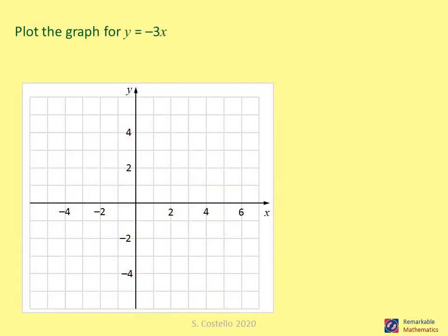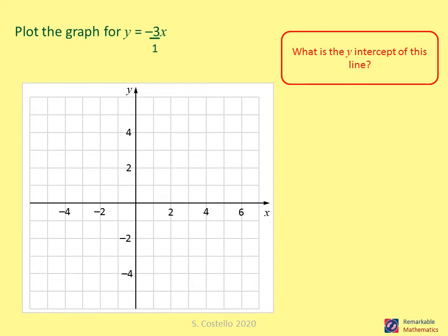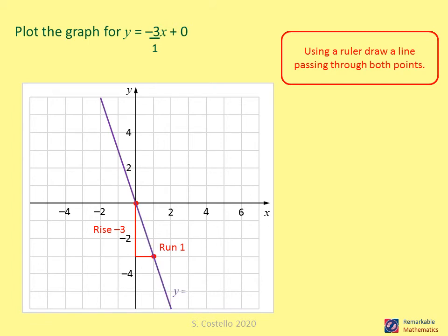Plot the graph of y equals minus 3x. Write the gradient over one to make the rise and run obvious. The y-intercept: since c has no stated value, it equals zero, so the line crosses at the origin. Mark that y-intercept, then use the gradient — a rise of minus three and a run of one — to mark another point. Use a ruler to draw the line and label it.